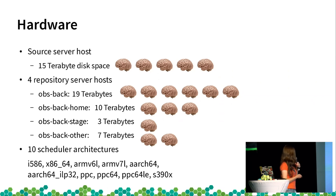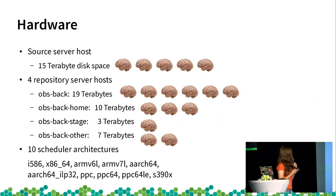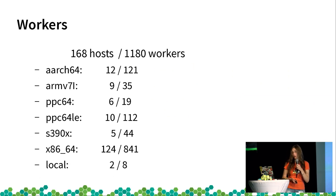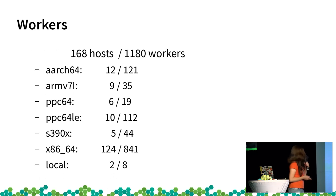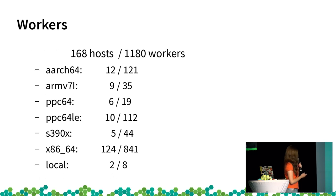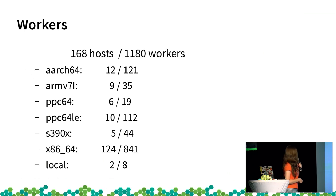We have 10 scheduler architectures — all of those you can see here. And for workers, we have 178 hosts and 1,180 workers, which you can also see broken down by architecture. For example, for the biggest architecture we have 124 hosts and 841 workers.